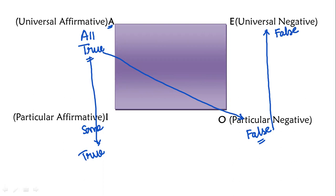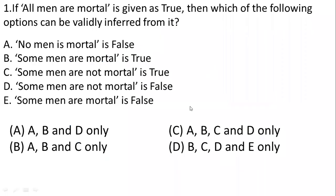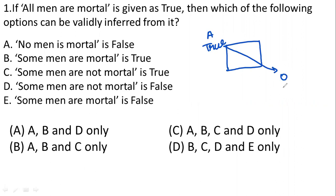So either way, we will go to the question. One more point I will tell you. A type of statement is true, and the other true is true. So the opposite O type will be false. And true will flow down, which means some type of statement will also become true.